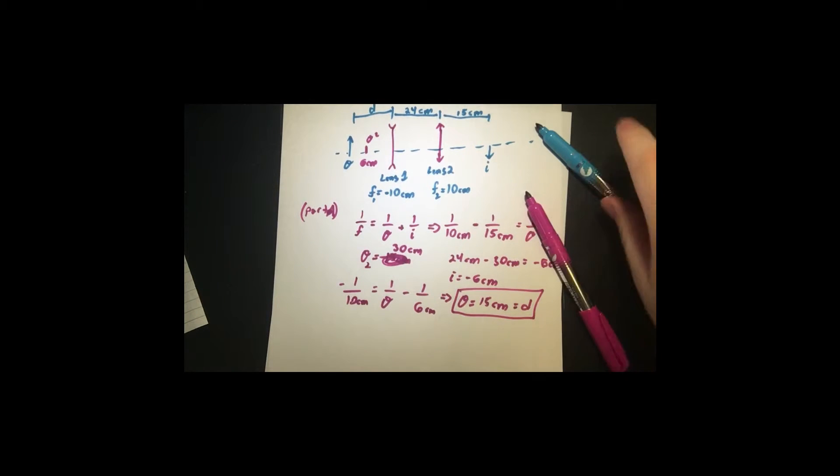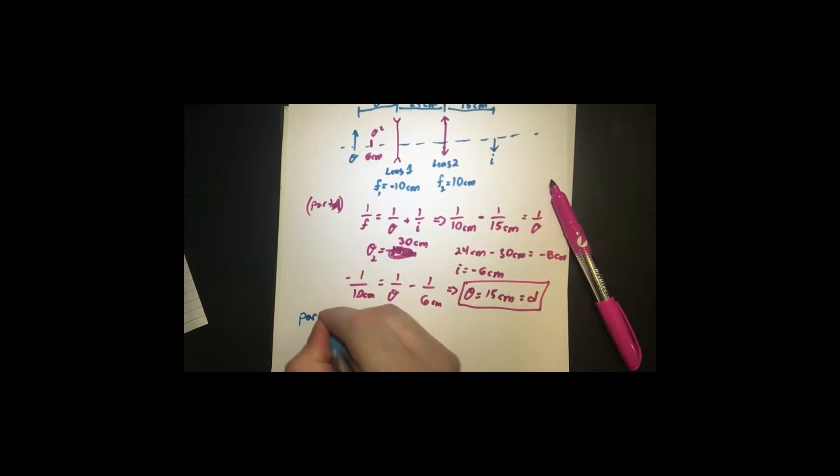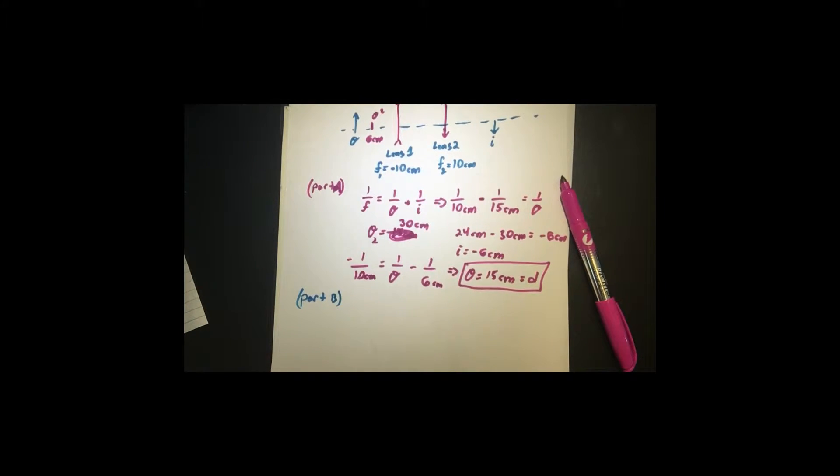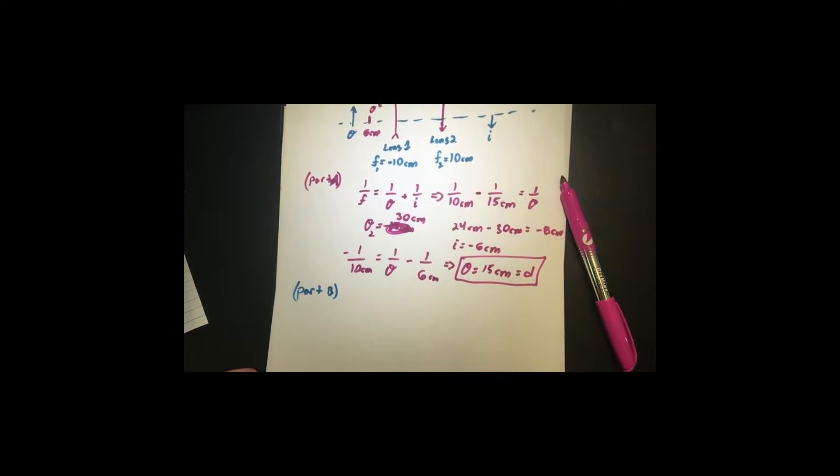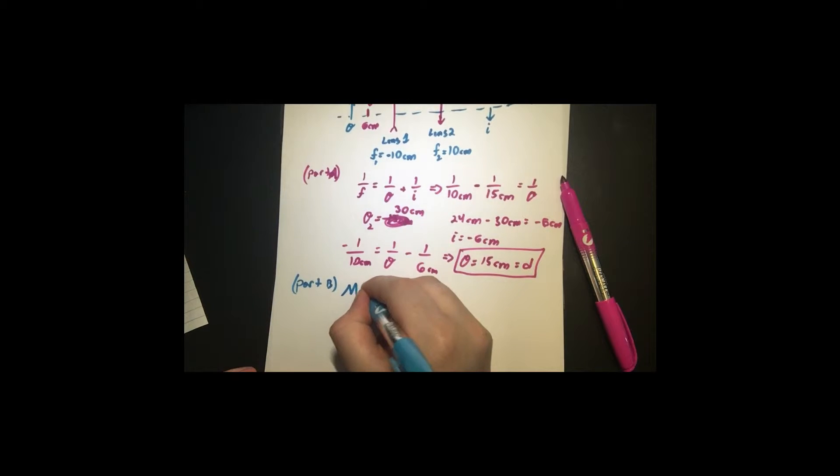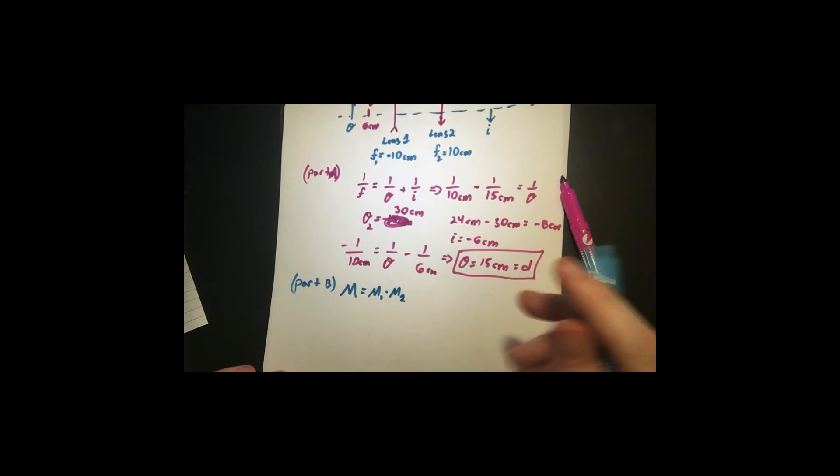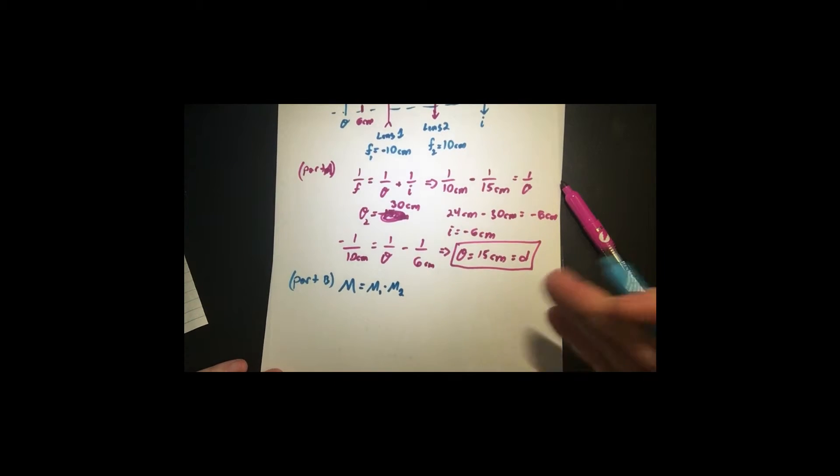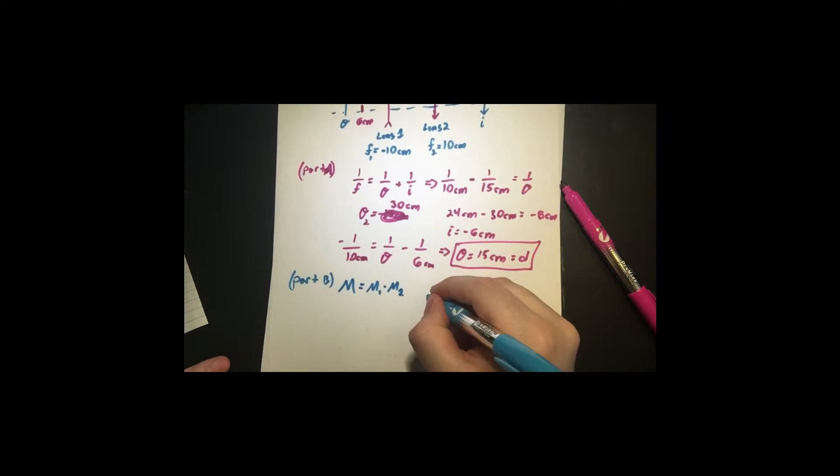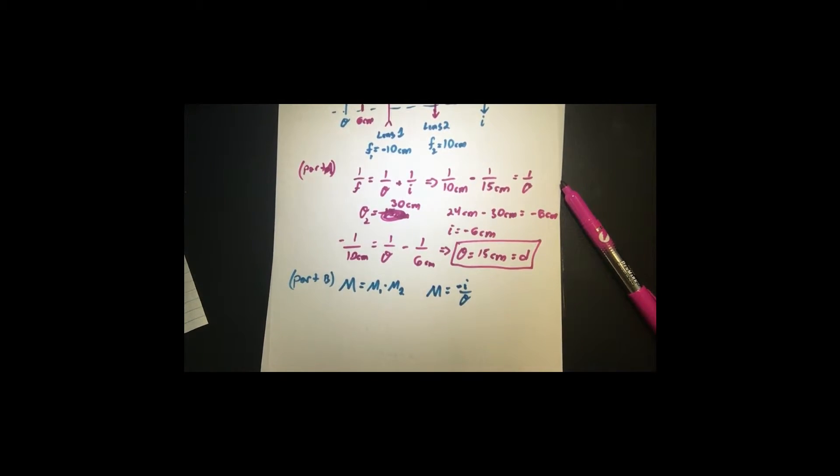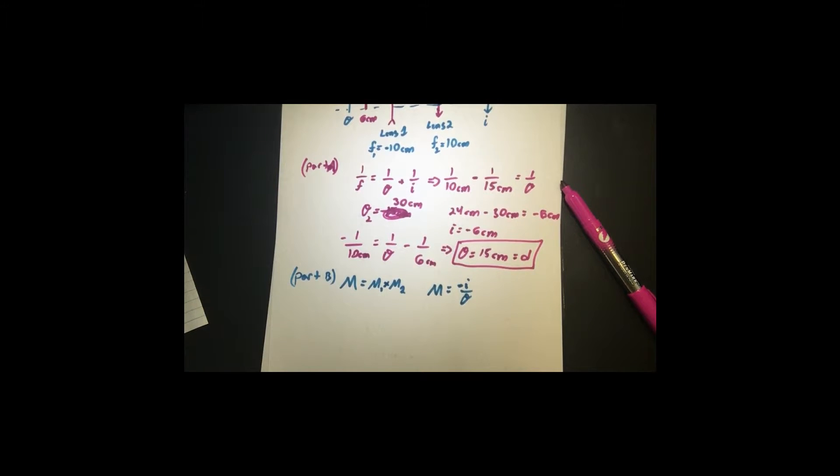Part B says, what is our total magnification of the two lens system? So we want to use the fact that magnification is multiplicative. That is, the net magnification is the magnification of 1 times the magnification of 2. And if we had more lenses, we would do it by times 3 and by times 4. So, we want to use the equations for magnification, which is negative image distance over object distance. And we want to do this for 1 and 2.